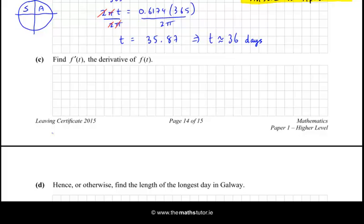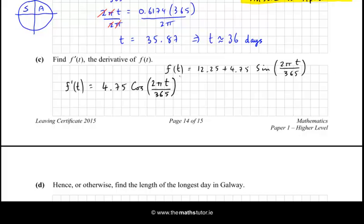Find f'(t), the derivative of f(t). Let's write out the function again first, and then we'll get its derivative. So now we'll get f'(t). The 12.25 will go to 0, it just disappears. The 4.75 is a coefficient, so that will stay. Sine goes to cosine. I need to use the chain rule here, so it'll be cosine of everything inside. And then we multiply by the derivative of what's in the brackets. So the derivative of what's in the brackets will be 2π/365. So to tidy that up, you would usually go 4.75 times 2π/365 cos(2πt/365). It's just usually a convention to put the trigonometric function at the end.